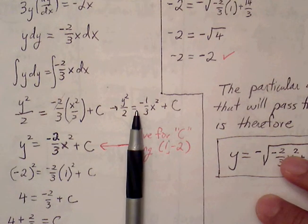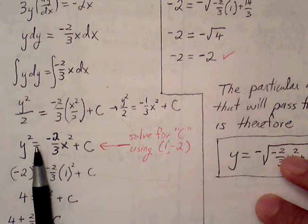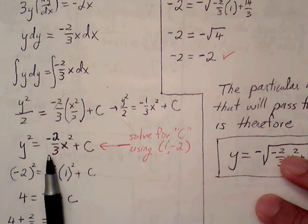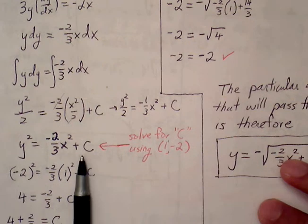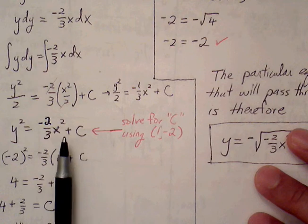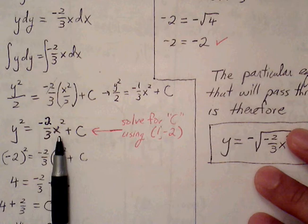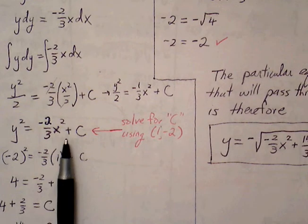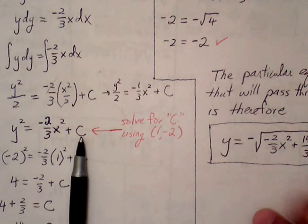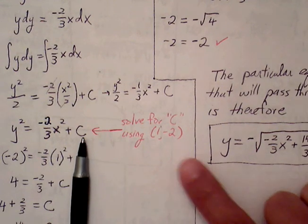When I multiply both sides by 2, I'm left with y squared equals negative 2/3 x squared plus c. Now at this point, I'm going to plug in and solve for c. It's a little bit easier to do it here rather than waiting to solve for y, because then we'd be left with a square root. We can still do it, but it's easier to plug in at this step. So I'm going to plug in my ordered pair and solve for c.